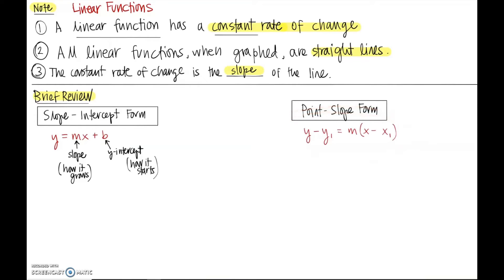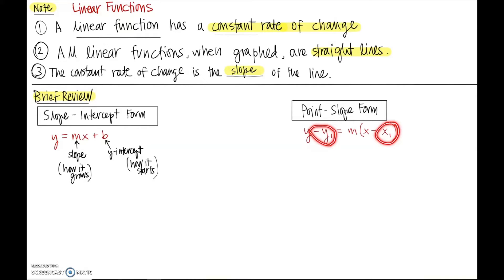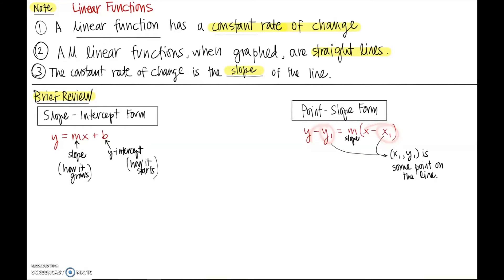Point-slope form looks like this: y − y₁ = m(x − x₁). We see our slope m right here. The y and x stay as variables, but now we have y₁ and x₁, which is just some random point that's on the line. We don't have the luxury of the y-intercept this time, but any random point will still do the job and help us create the formula for this line.